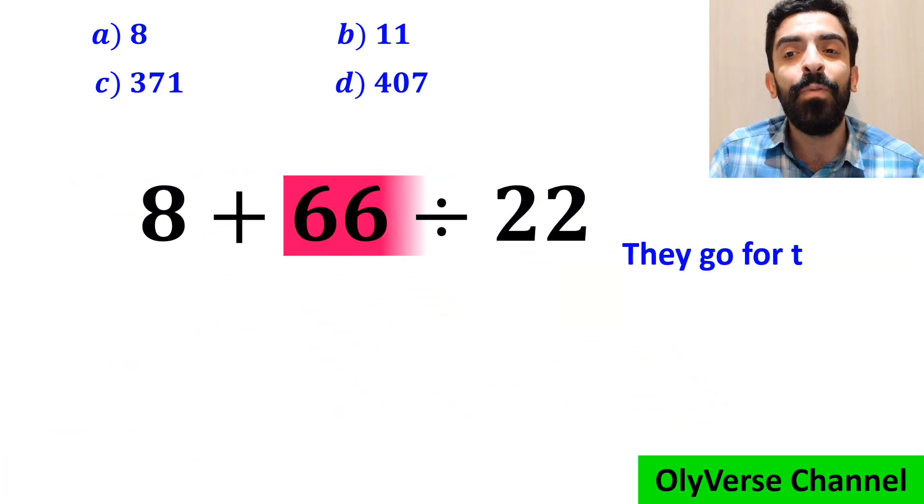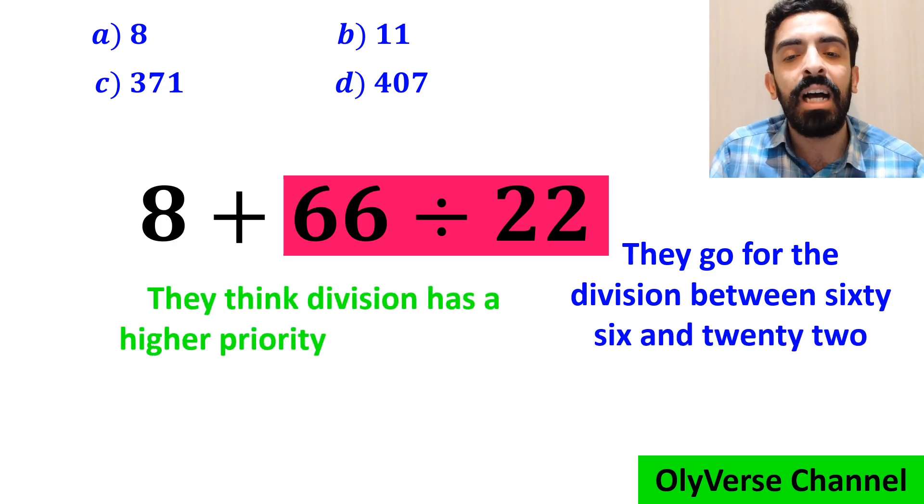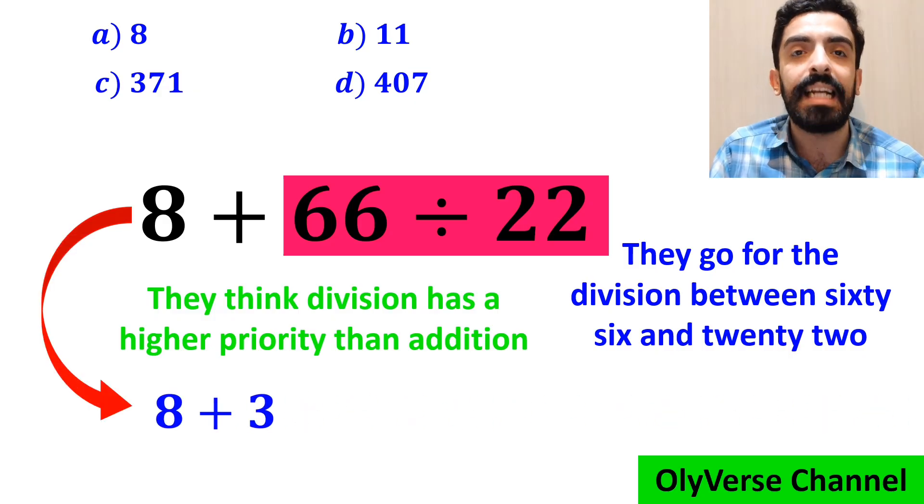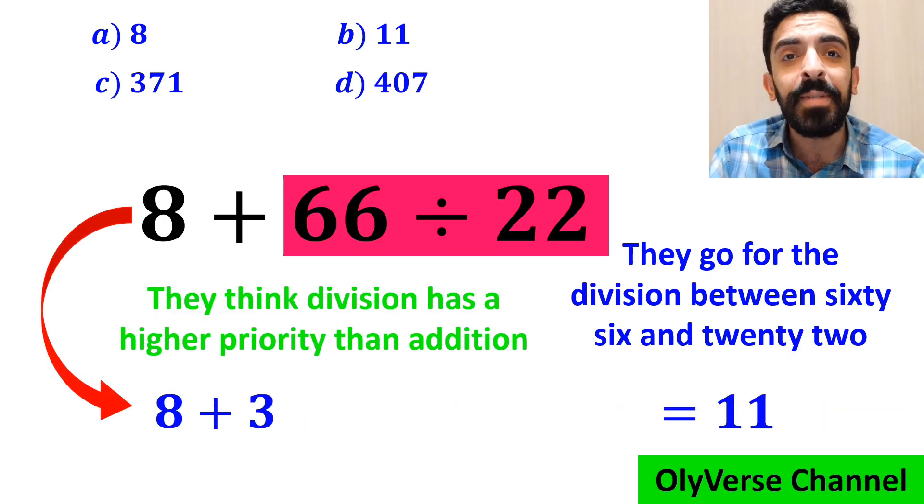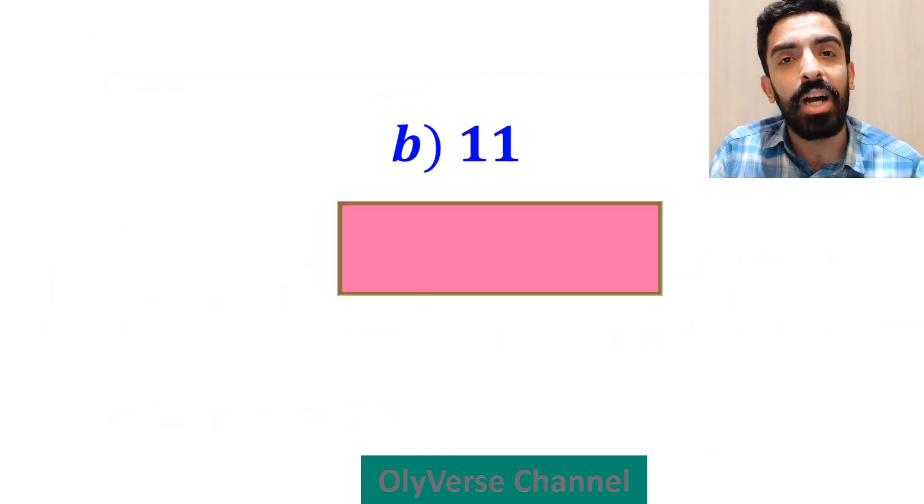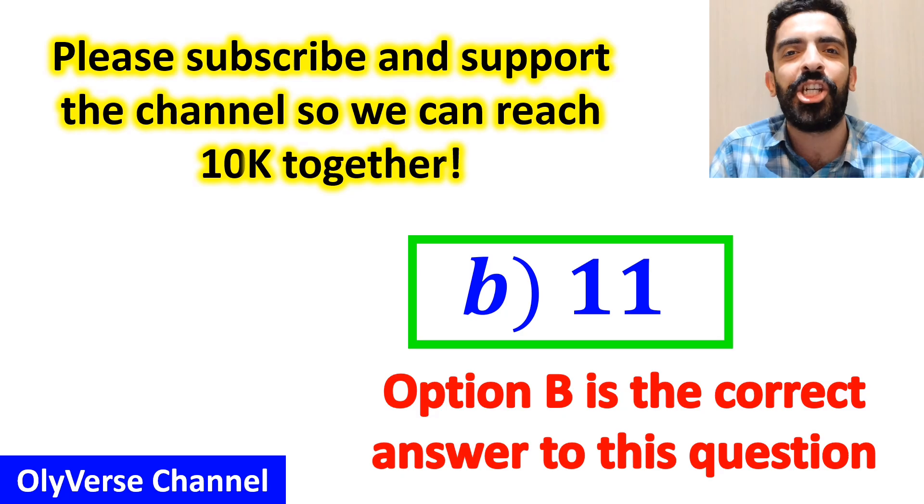Then they go for the division between 66 and 22 because they think division has a higher priority than addition. And they rewrite this expression as 8 plus 3 which ultimately gives them the answer 11. And immediately they conclude that option B is the correct answer to this question.